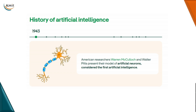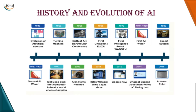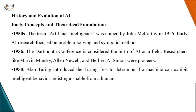Following that we have the evolution of transformers, large language models, and ChatGPT's generative pre-trained models. The history of AI actually started with American researchers Warren McCulloch and Walter Pitts, who presented their model on artificial neurons, considered the first AI project. A conference in 1956 established the theoretical foundations of AI, and the term AI was coined by John McCarthy. After the first Dartmouth conference, the Turing test was developed to determine if a machine can exhibit intelligent behavior like a human.